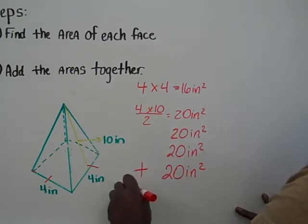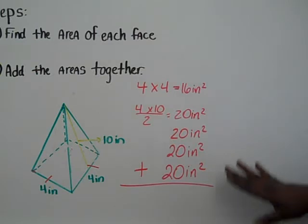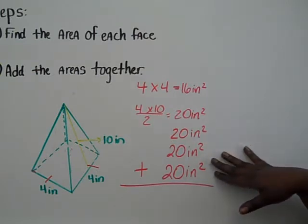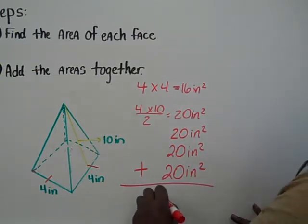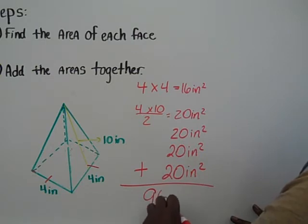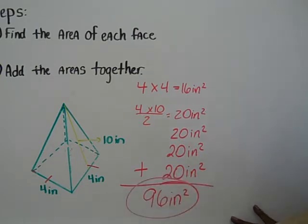Step two, add the areas together. We have four 20s, which is 80, plus the 16 to get 96 inches squared for the total surface area of this square pyramid.